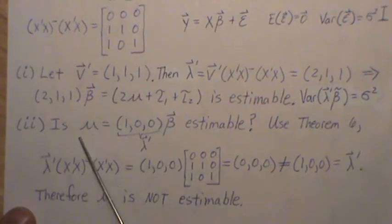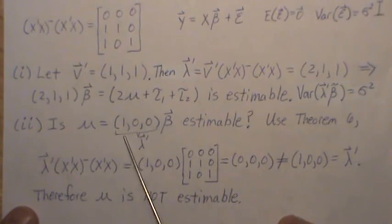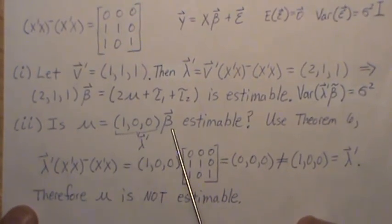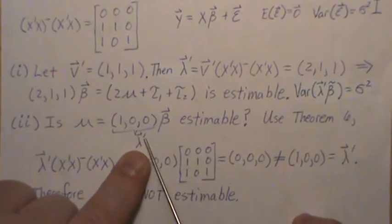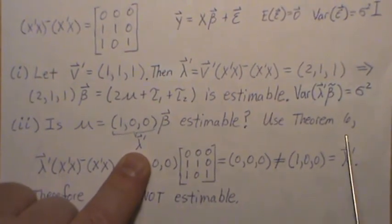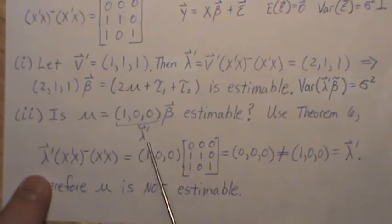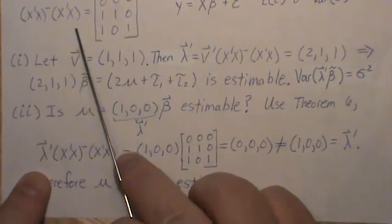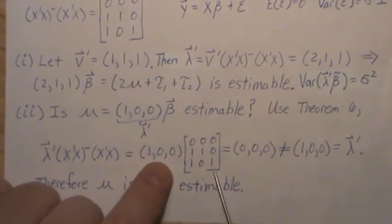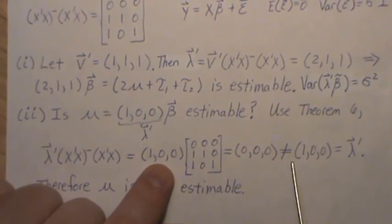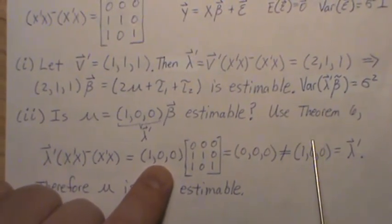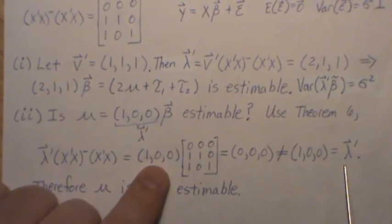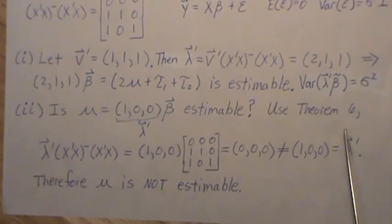Now, the question is mu estimable. And to get mu, it's 1, 0, 0 times beta. And that's that lambda, right? So let's use theorem 6. Let's post-multiply this lambda times this matrix. Right? We did the math already. So that's this. That generates 0, 0, 0, which is not our original lambda back, but 1, 0, 0. So it is not estimable.